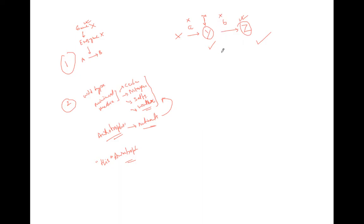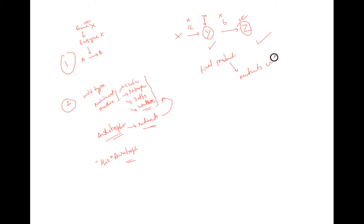So to understand any pathway: if we provide the final product of that reaction, all the mutants will survive. This is the key principle — providing the final product in the medium allows all mutants to grow.